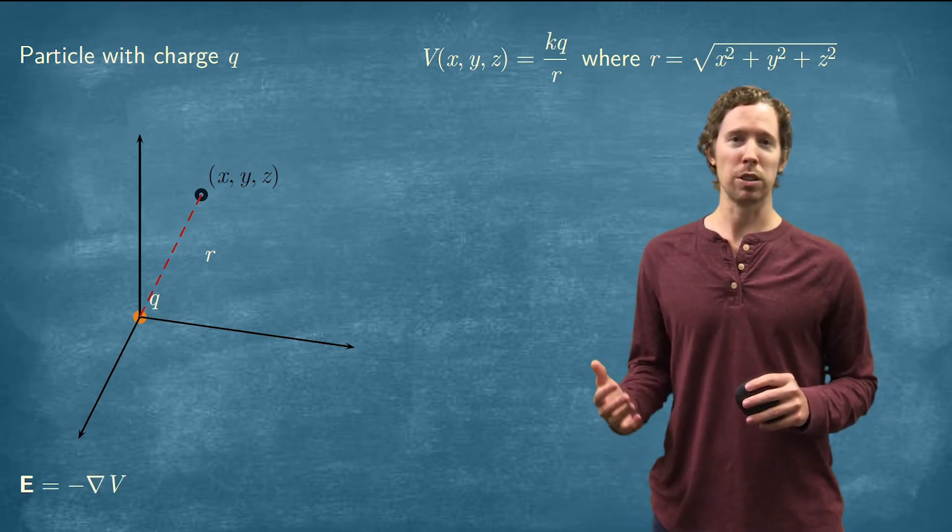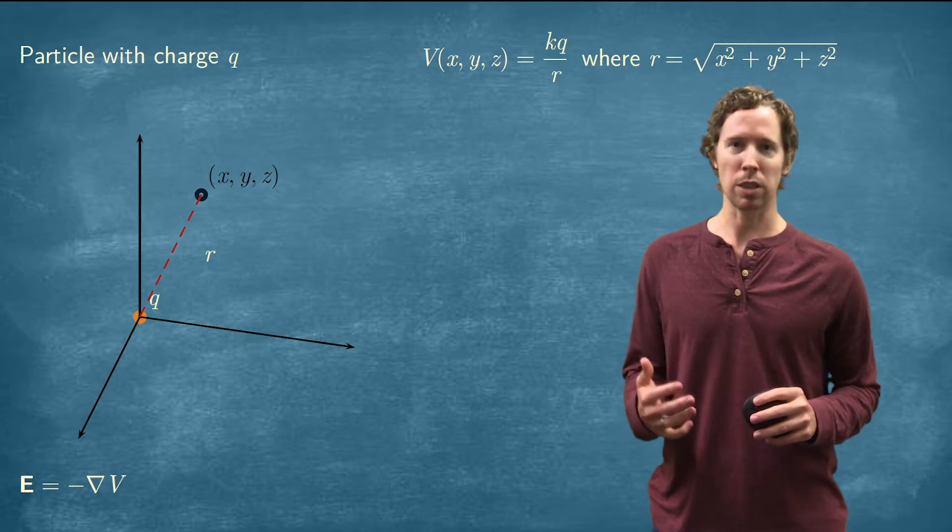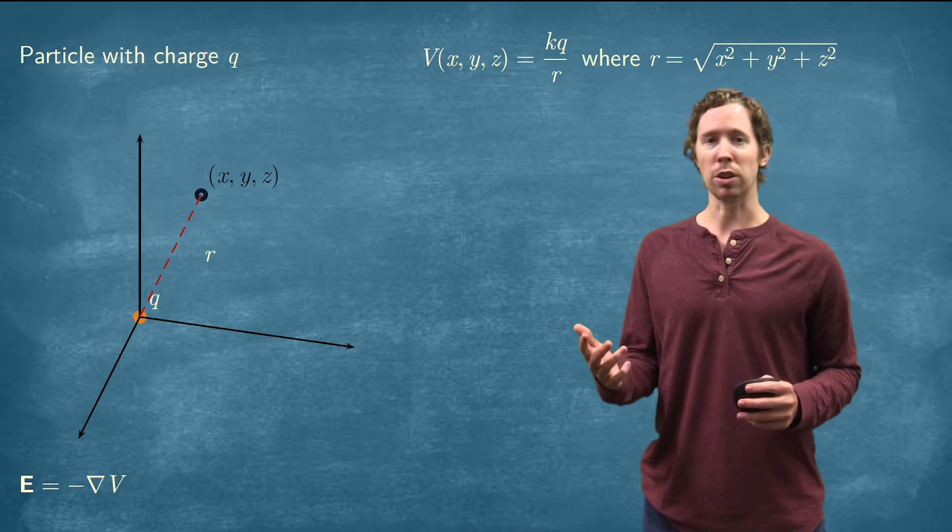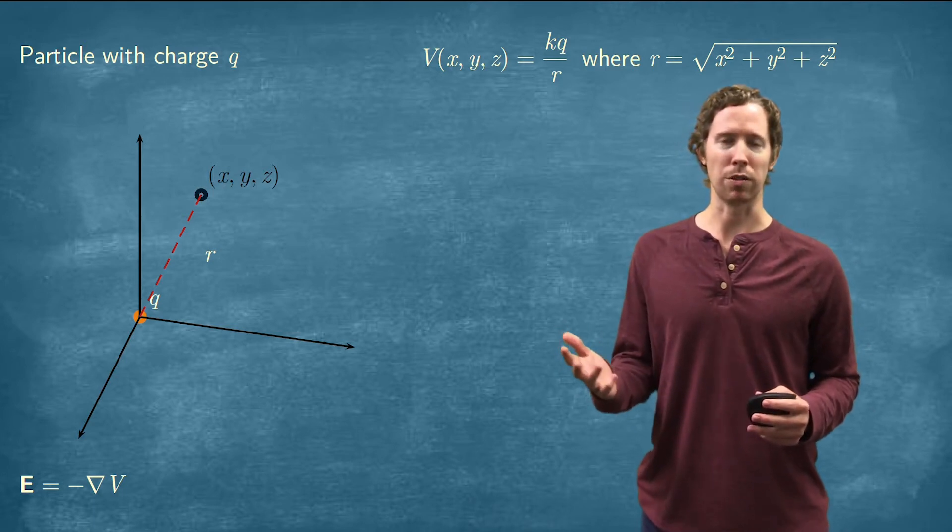The electric field is where this gets interesting because the electric field is minus the gradient of this electric potential. Electric field you may also know as electric field intensity.